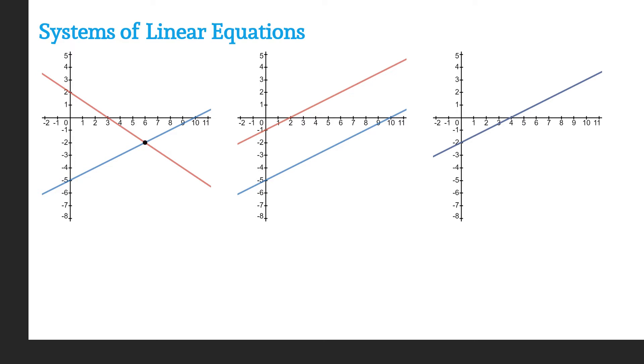So the first one that we talked about and saw is a system with two lines and these two lines are going to intersect. How can you accommodate the intersection of two lines? Well, the lines, first of all, have to have different slopes.